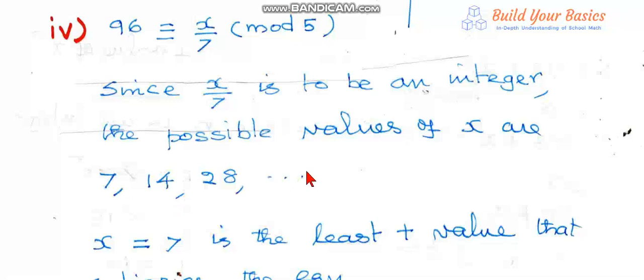Now by trial and error method, let us try x equal to 7. When you put x equal to 7, 7 by 7 is 1. 96 minus 1 is 95, which is divisible by 5. So the relation is satisfied. So when you put x equal to 7, this congruence relation is true.